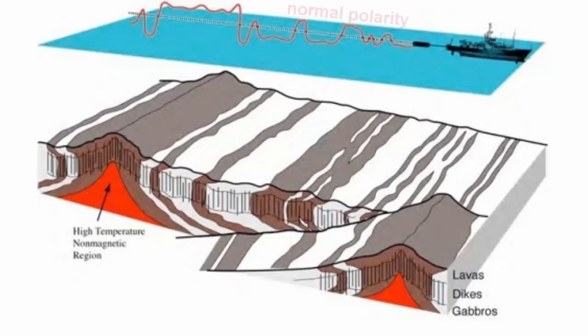Where the magnet picked up positive anomalies, they registered magnetic fields that were aligned with the present magnetic field, which we call normal polarity, and thus boosted that field, making it stronger.